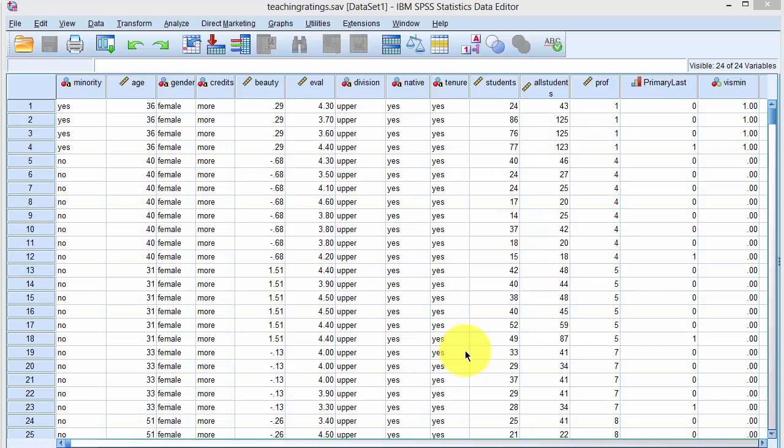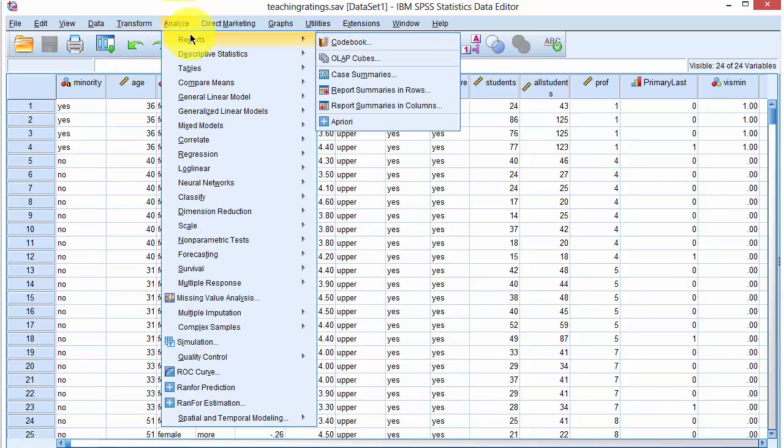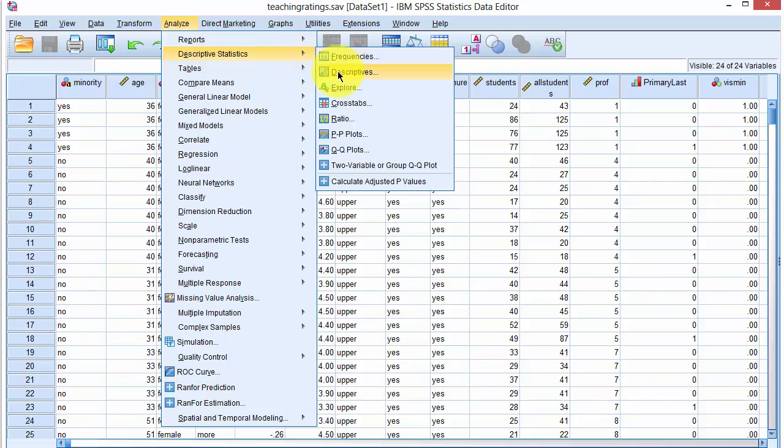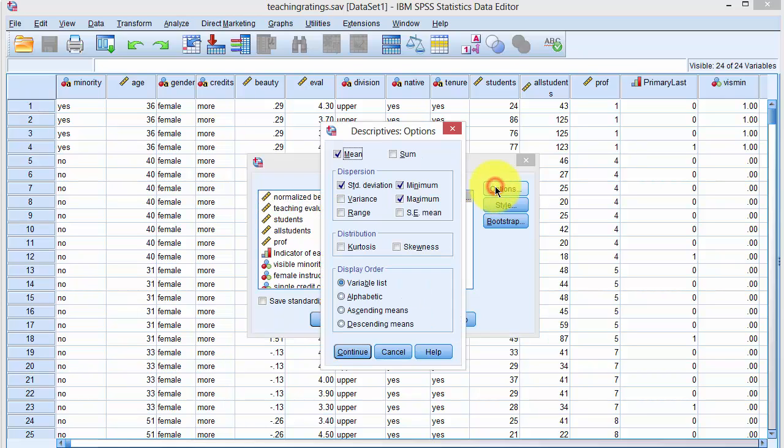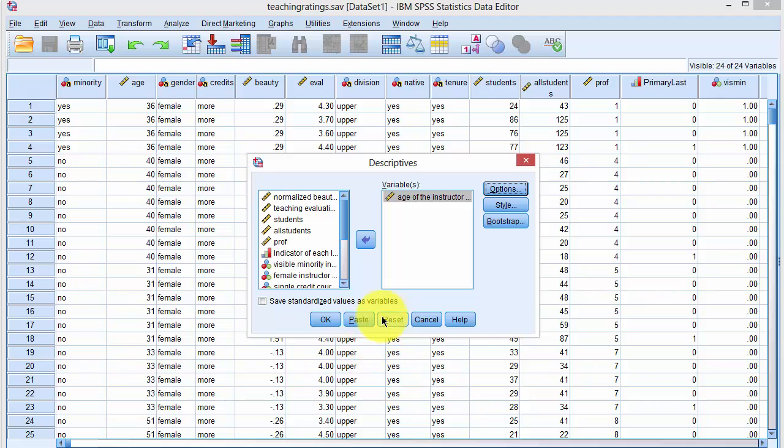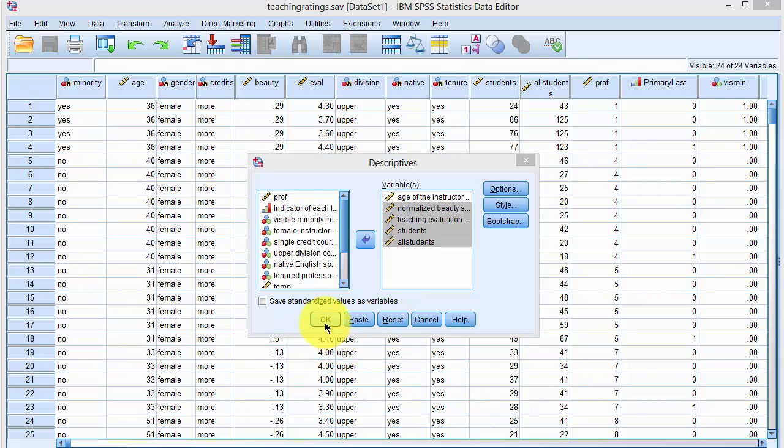We will return to our data set now and use another command called descriptive statistics. And click on descriptives and we select the variables of choice, for example, age of the instructor. And under options, we have the mean, the standard deviation, minimum, and maximum. And let's select the other variables as well.